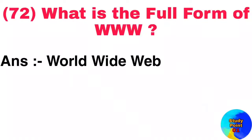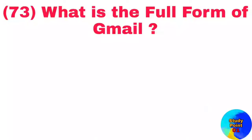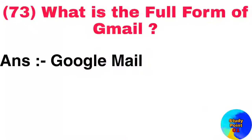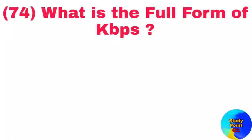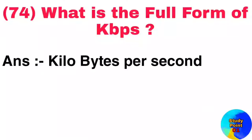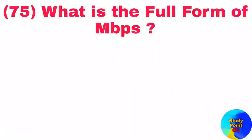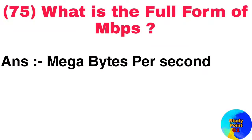Question number 72: What is the full form of WWW? Answer: World wide web. Question number 73: What is the full form of Gmail? Answer: Google mail. Question number 74: What is the full form of KBps? Answer: Kilobytes per second. Question number 75: What is the full form of MBps? Answer: Megabytes per second.